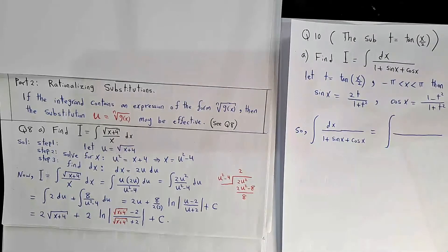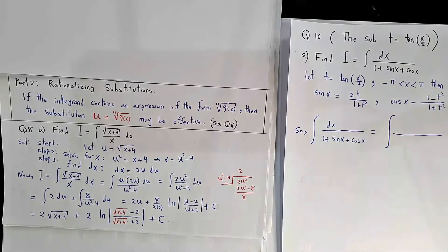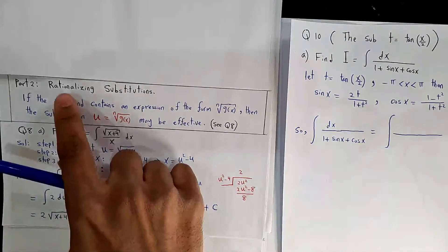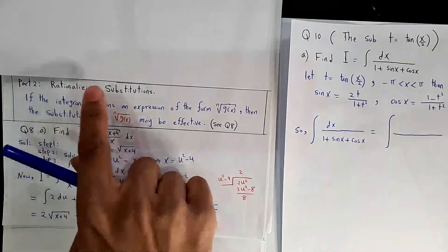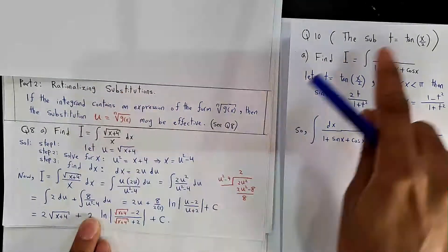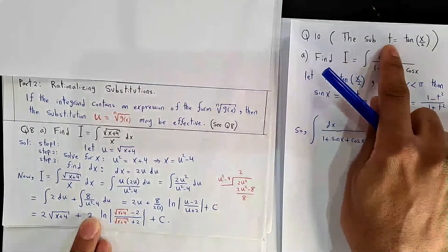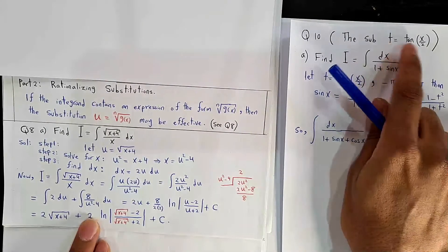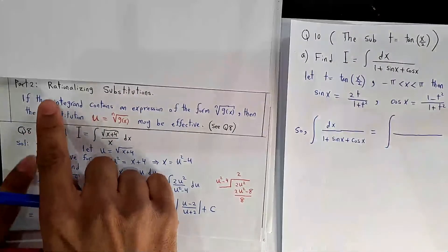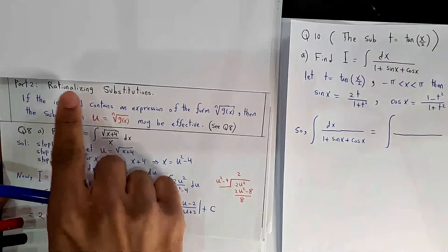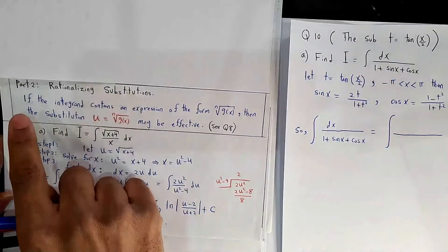As-salamu alaykum. Today we will talk about the second part of section 7.4. In this part we have two sub-parts: rationalizing substitution and the substitution t equal tan x over 2. Let us start with the rationalizing substitution.